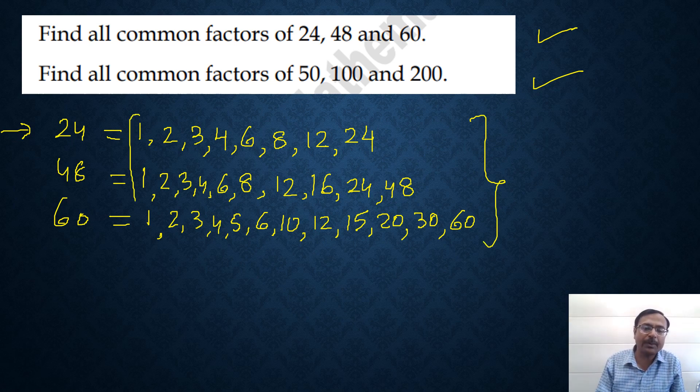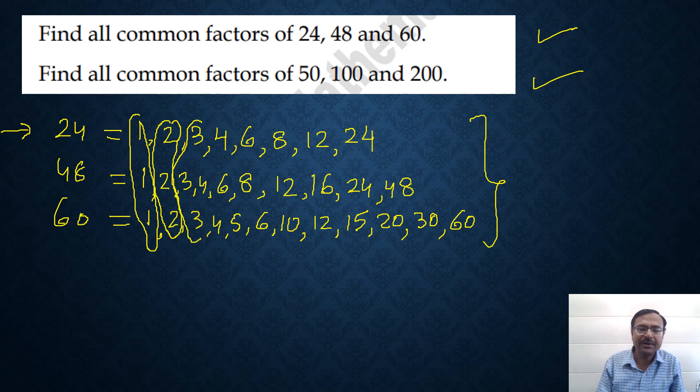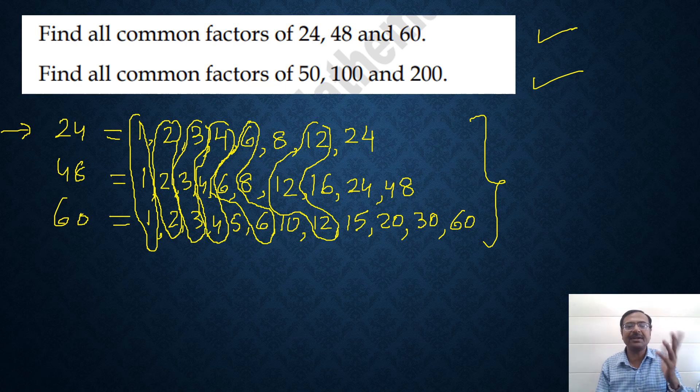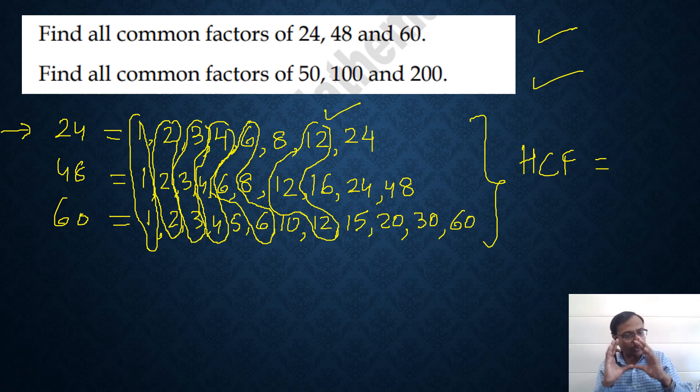So what are the common factors? Look at the common factors. 1 is a common factor, 2 is a common factor, 3 is a common factor. See, I am encircling all the common factors. 4 is a common factor and then 6, 6 is also a common factor. How about 8, no. We have 12 which is a common factor. I don't think we have another common factor there. Now that's where I wanted to reach. Highest common factor is 12. There are common factors which are lower than 12 but the highest common factor is 12.